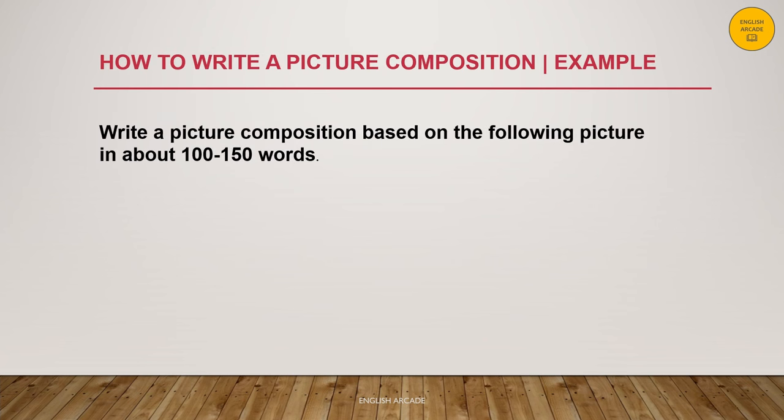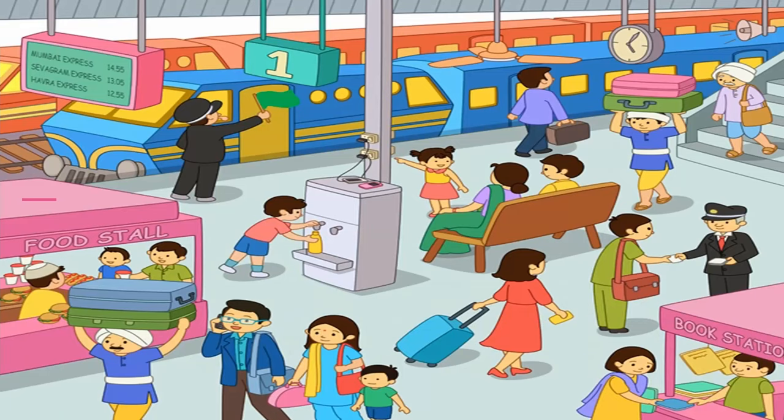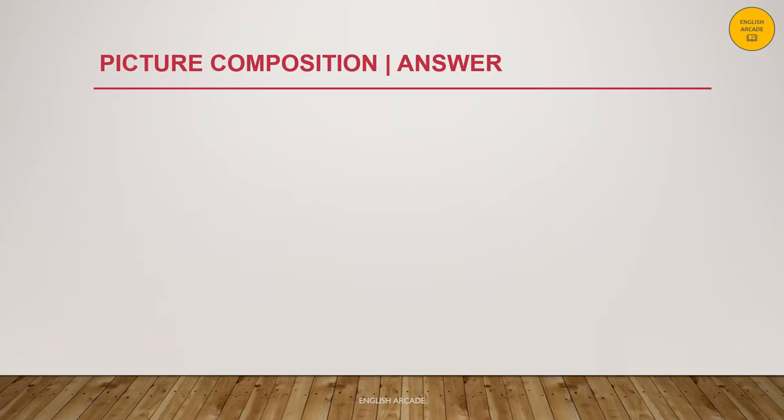We will now understand how to write a picture composition with the help of this example. Write a picture composition based on the following picture in about 100 to 150 words. Please observe the picture very carefully. You may use the pause option to have a good look at it. Now let's have a look at the answer.